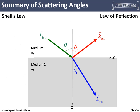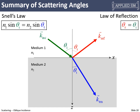In summary: Snell's law and the law of reflection let us calculate the angles of the reflected and transmitted waves, and these angles are independent of polarization. However, how much power gets reflected and transmitted does depend on polarization — this is where TE and TM (or perpendicular and parallel) polarizations become critical, and we turn to the Fresnel equations for those calculations.